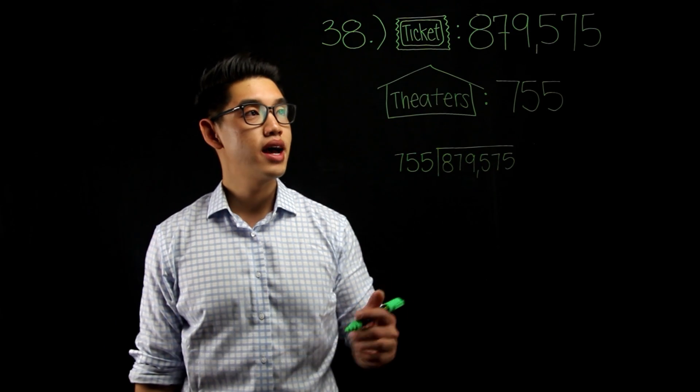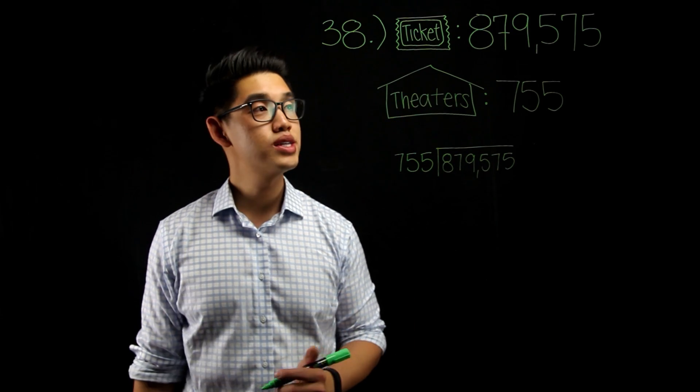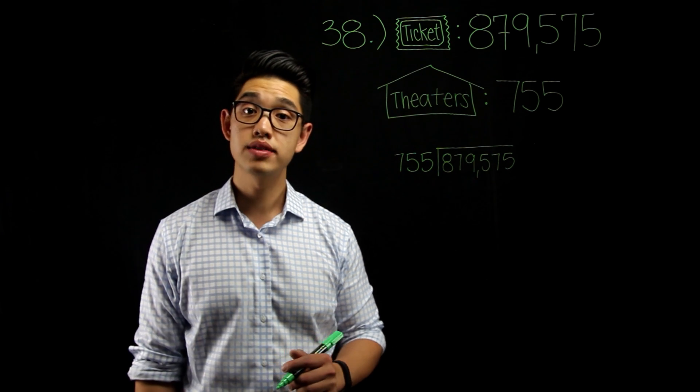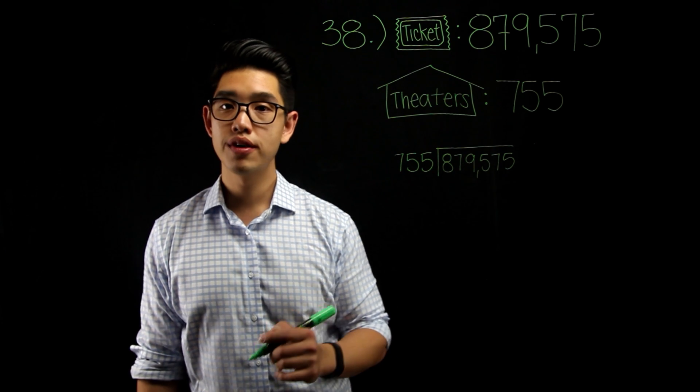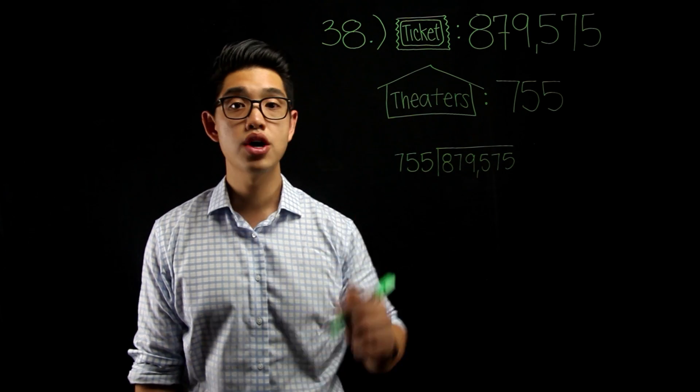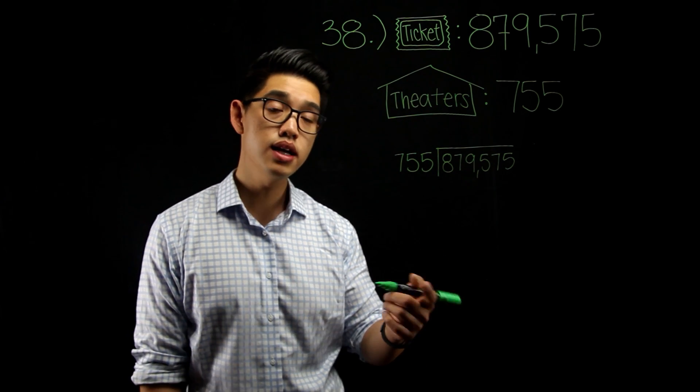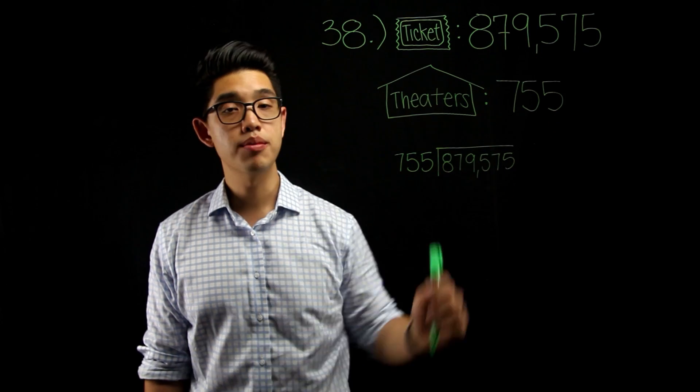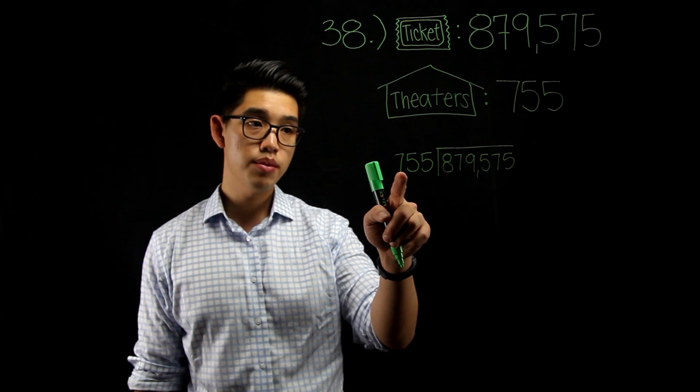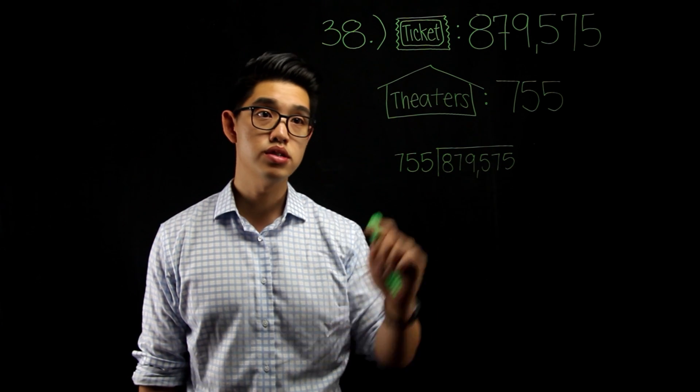Number 38 says that a movie sold 879,575 tickets and that this movie was played in 755 theaters. We want to try to figure out how many tickets each theater sold. So, as you can see, this is a dividing problem, where this is the divisor and this number is the dividend. We're going to try to see how many times 755 goes into this number here.